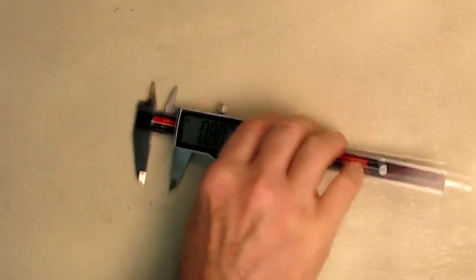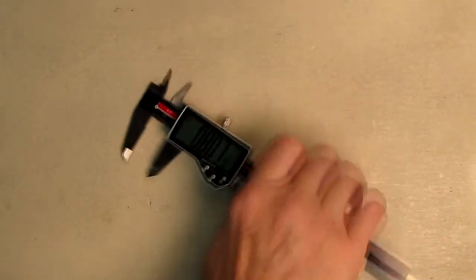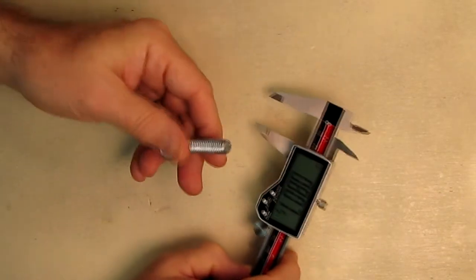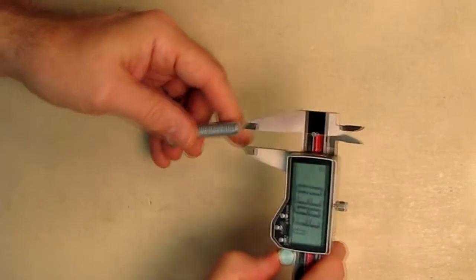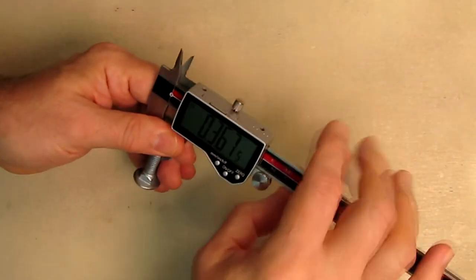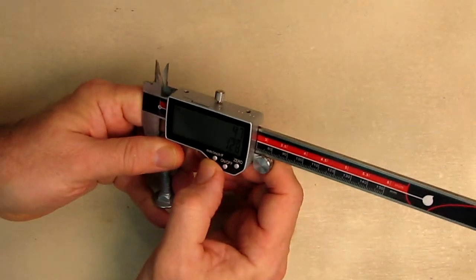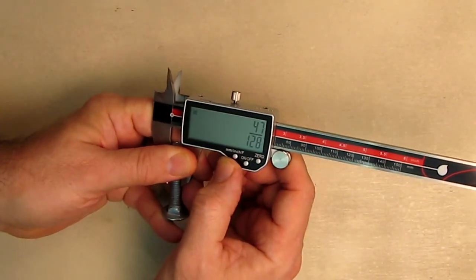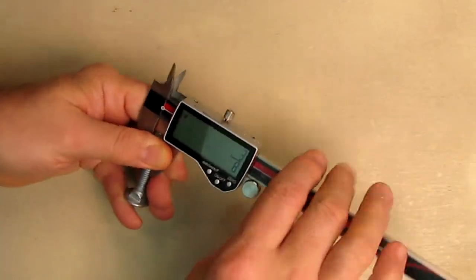A lot of times you have nuts and bolts and you're not sure what size they are. We can go right here and measure the outer diameter 0.367. Now we know that, or we can get it in fractions 47/128 or 3/8 of an inch. So now I know that's a 3/8 of an inch bolt.